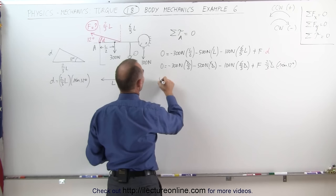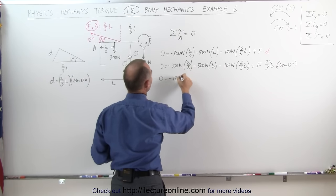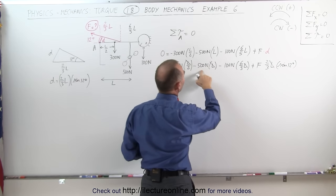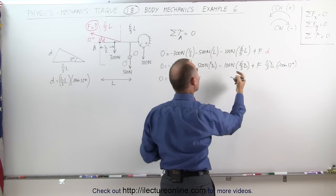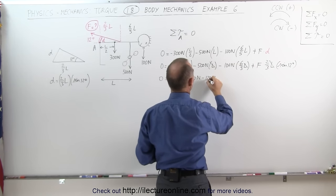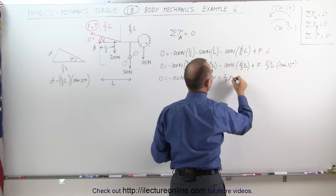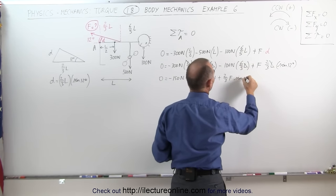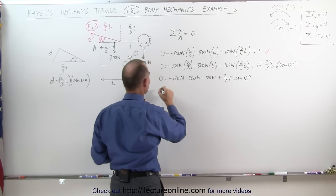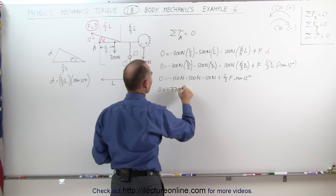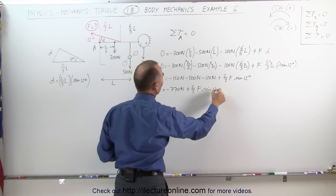Simplifying, zero equals minus 300 divided by 2, that's minus 150 newtons, minus 500 newtons, minus 100 divided by 5 times 6, that's minus 120 newtons. And finally we have plus two-thirds F times the sine of 12 degrees. Combining these, that's 650, 750, 770 newtons. Minus 770 newtons plus two-thirds F times the sine of 12 degrees.